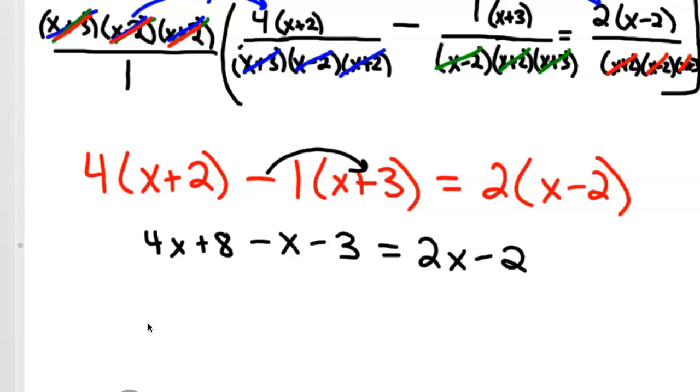Then you combine your terms on each side. So this would be 3x plus 5 equals 2x minus 2. Oh, and see, I already made a mistake. Some of you, the alarm bells were going off. Let's see if you found my mistake. There it is.